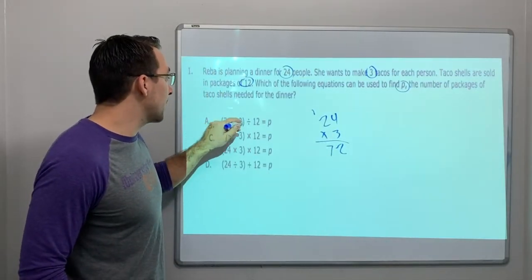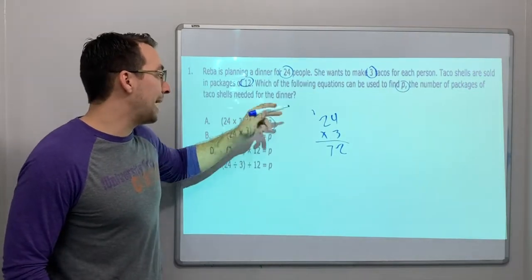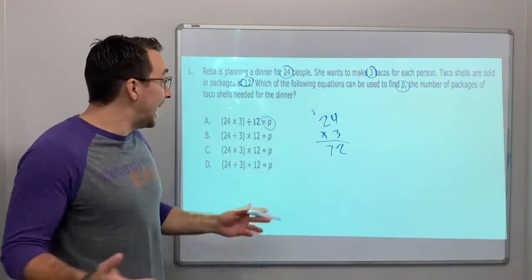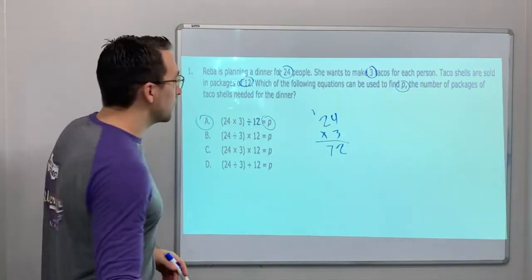Check this out: 24 times 3 divided by 12 equals P packages. That's our question. We're going to divide by the packages. There we go. A is our answer.